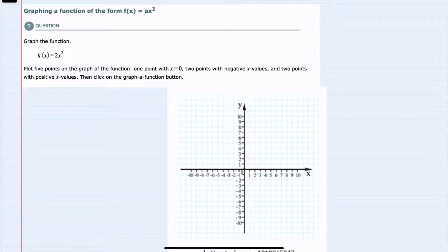The method we're told to use is to plot five points, so we'll create a table to find those points.